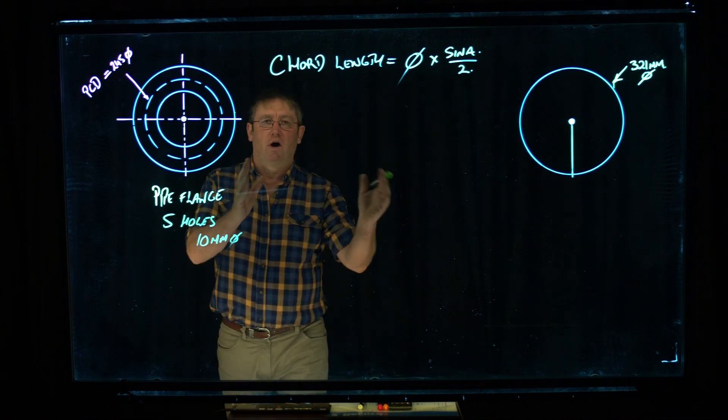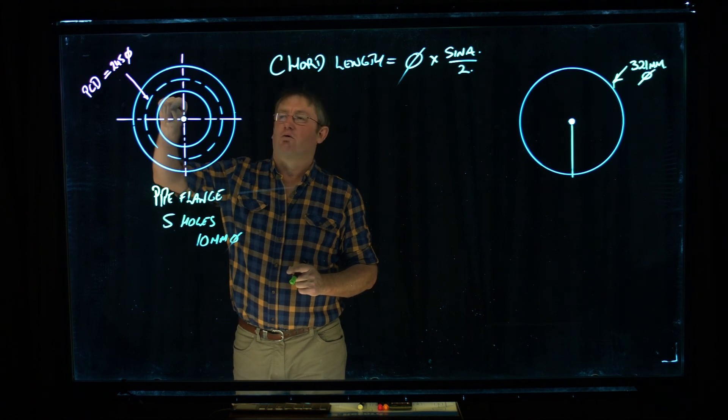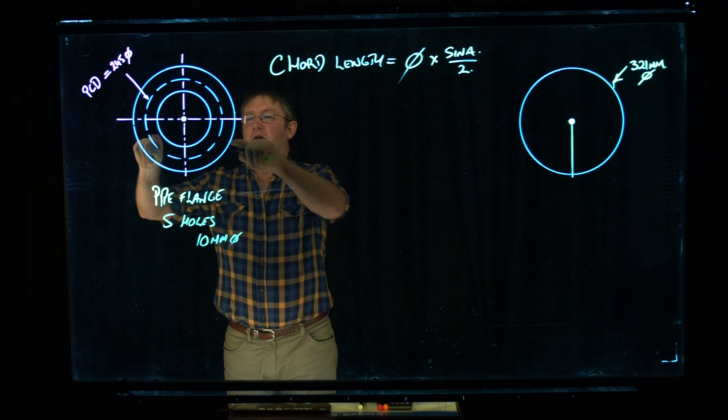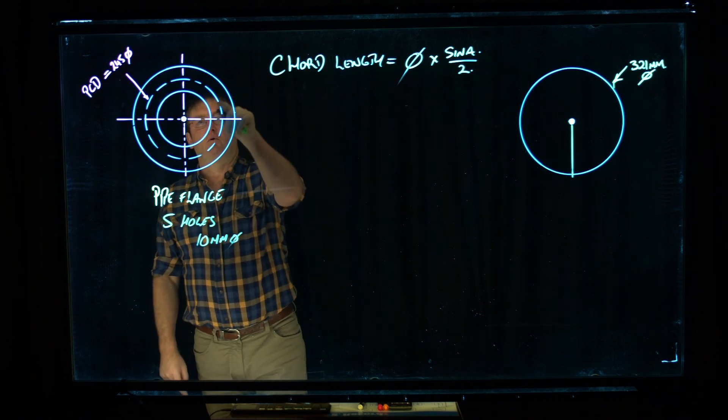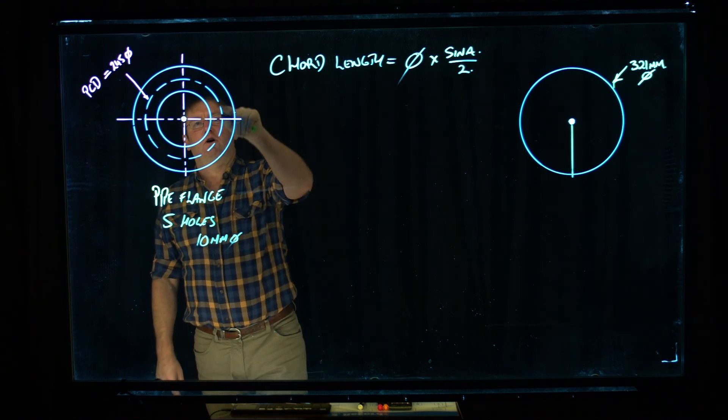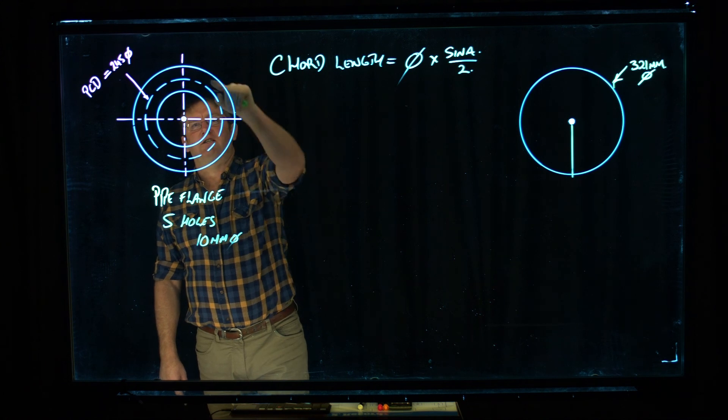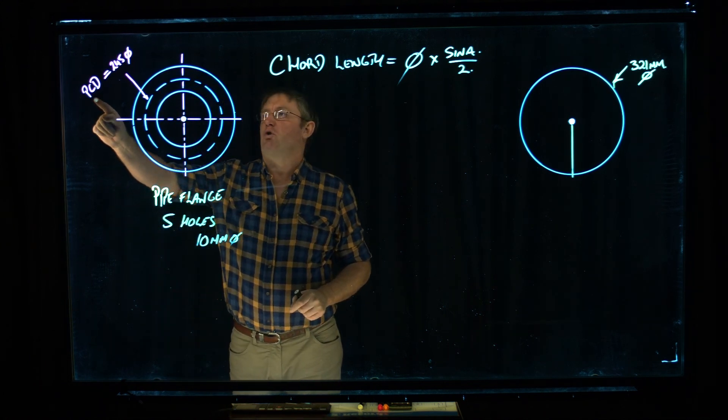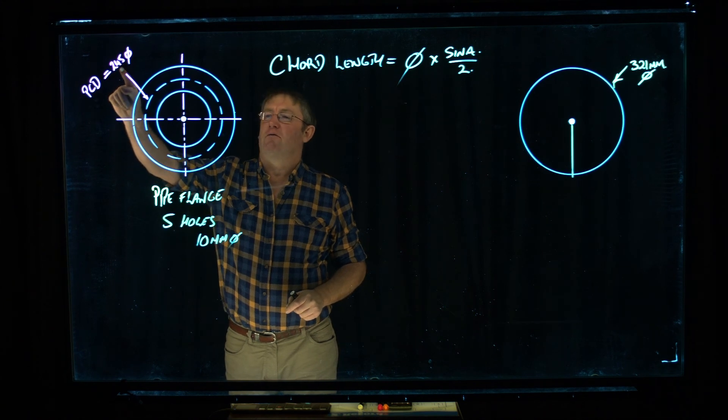So the first thing, we all know that a circle has 360 degrees around the outside of it. So what I want to do is put the points for the five holes on this median line in the center. And it has what's known as a PCD, a pitch circle diameter, of 245mm.